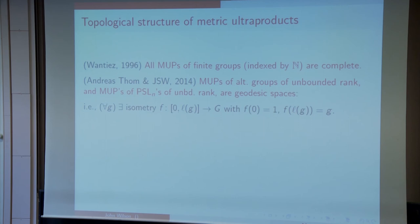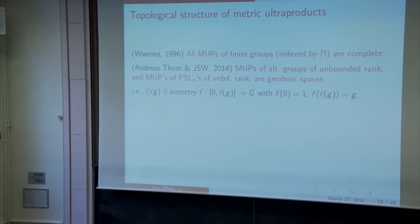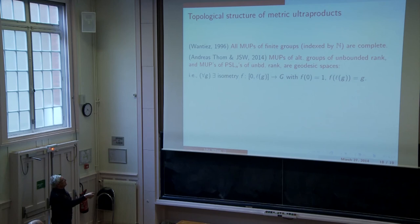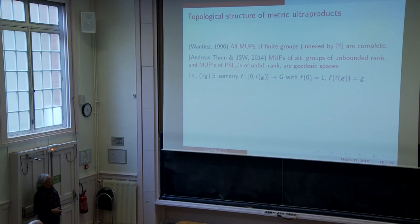Just a brief hint that this is not quite as satisfactory as you'd like. Here we're really using the fact that n is countable. Sets that are not countable have quite bizarre ultrafilters defined on them. And I don't know how to prove that metric ultraproducts over larger index sets are complete. Andreas and I have proved this property as well, which is a little reminiscent of what one can prove for some asymptotic cones: that metric ultraproducts of alternating groups of unbounded rank and also metric ultraproducts of PSLNs of unbounded rank are geodesic spaces.